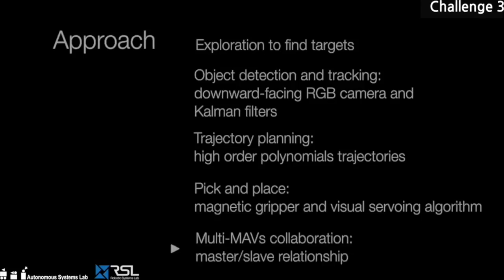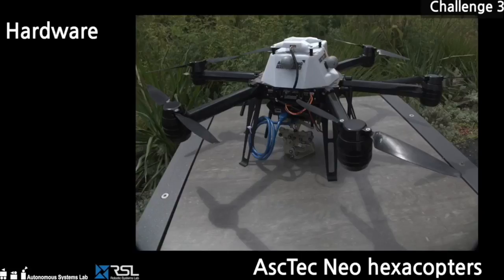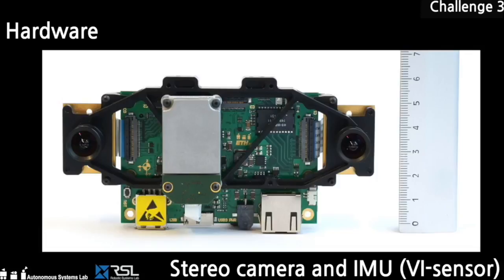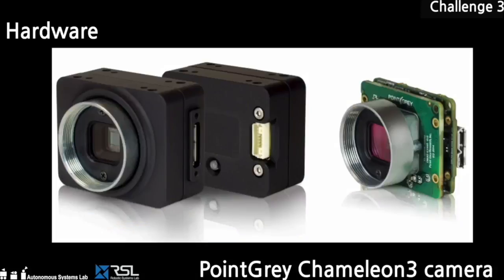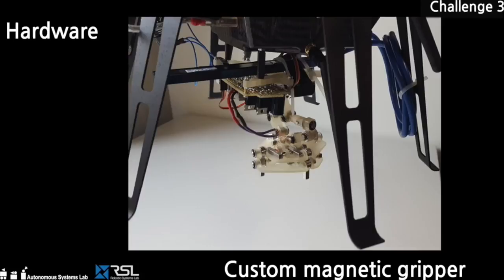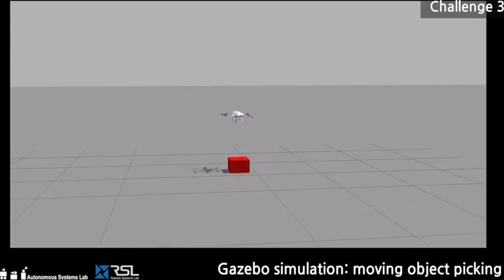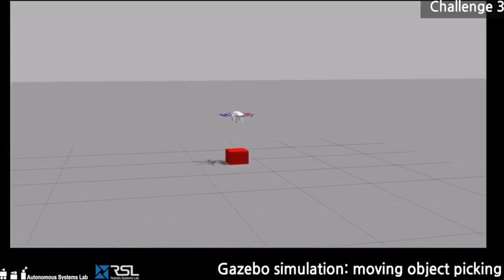For heavy objects, multiple UAVs are employed using master-slave paradigm. The hardware employed in Challenge 3 consists of an Ascending Technologies Neo-Hexacopter equipped with stereo camera and IMU, down-facing RGB camera, and a magnetic gripper. Simulation and real experiments have been conducted to validate our method.